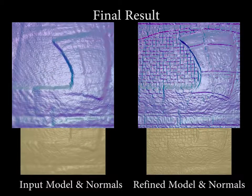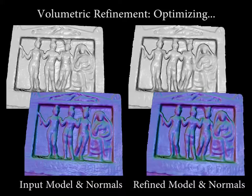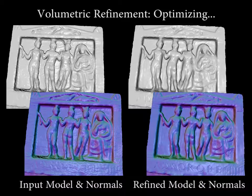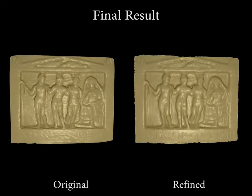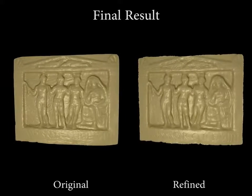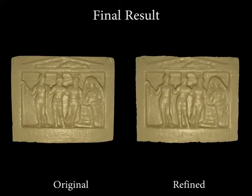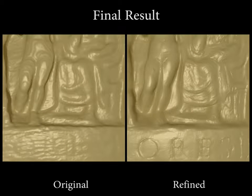Here we can see the fine scale detail which our method retrieves. This is a result on a relief sequence, showing the hierarchical optimization of the truncated signed distance field. Note that we retrieved the geometry of the carved letters.